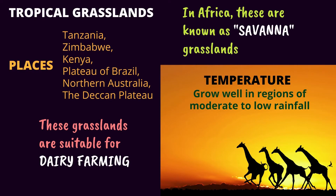The places where we can find the tropical grasslands are Tanzania, Zimbabwe, Kenya, the Plateau of Brazil, Northern Australia, and the Deccan Plateau.